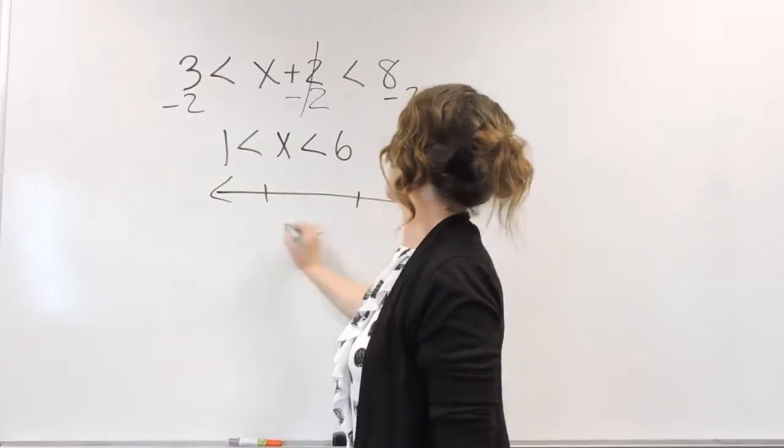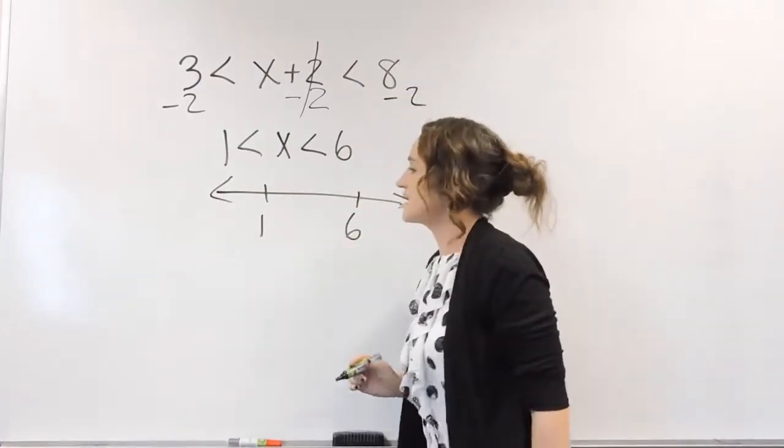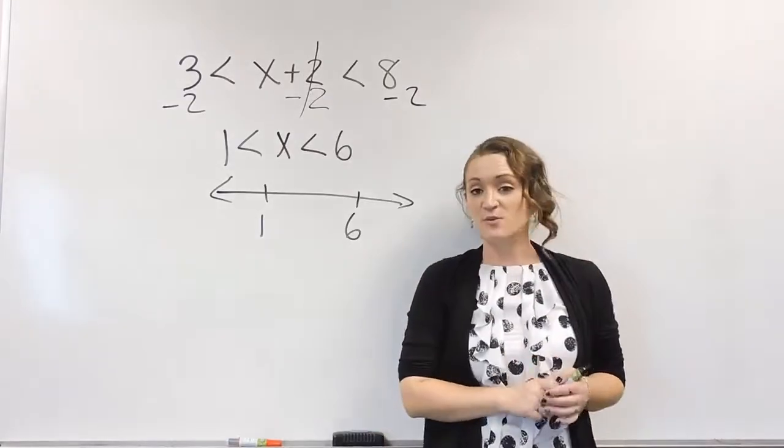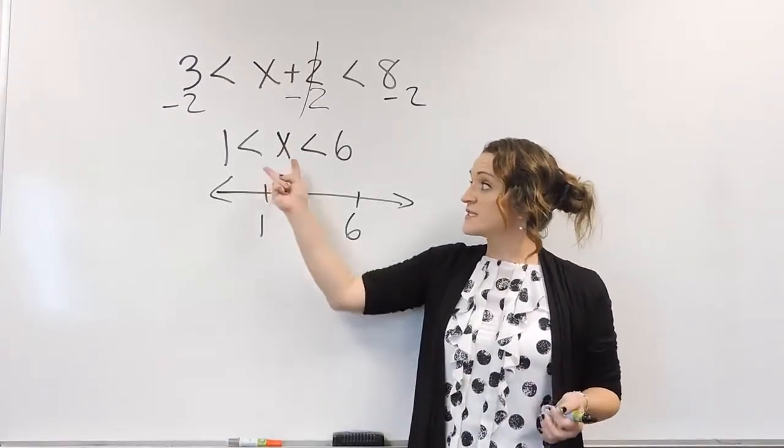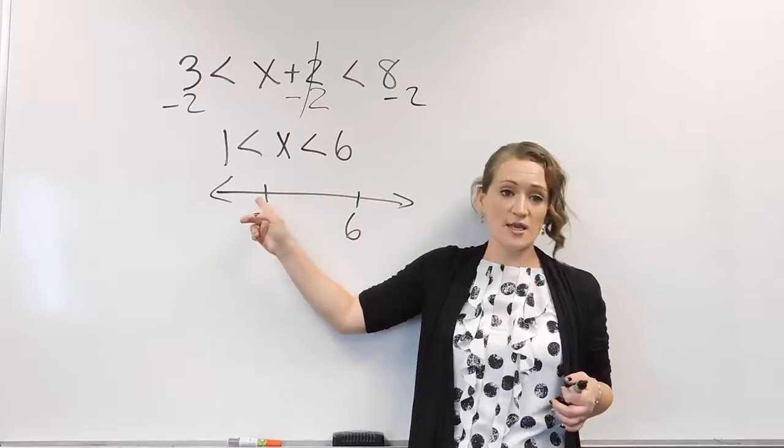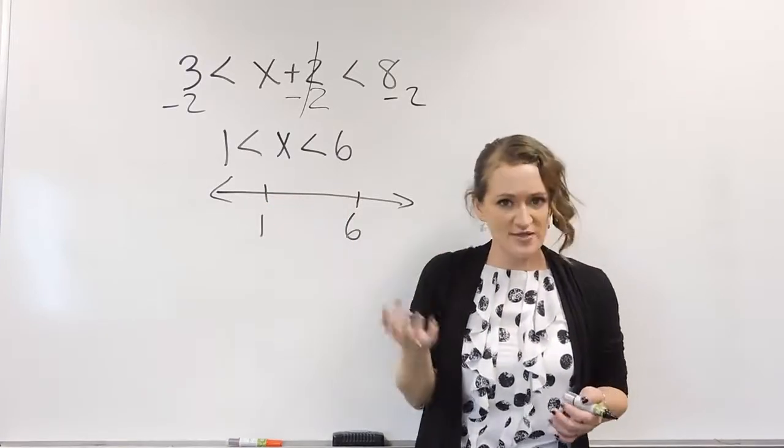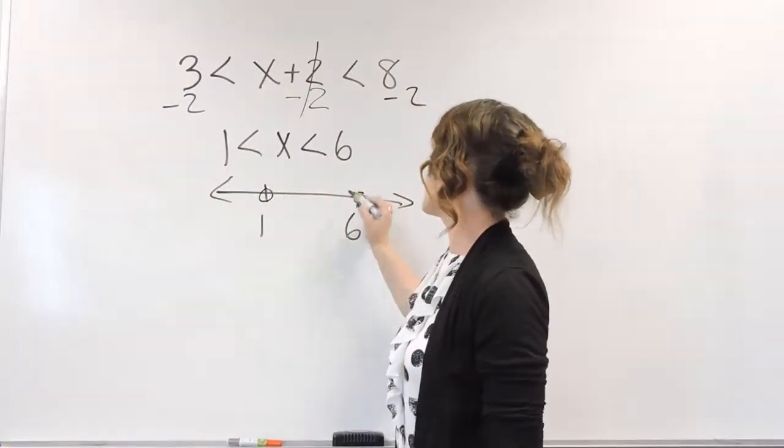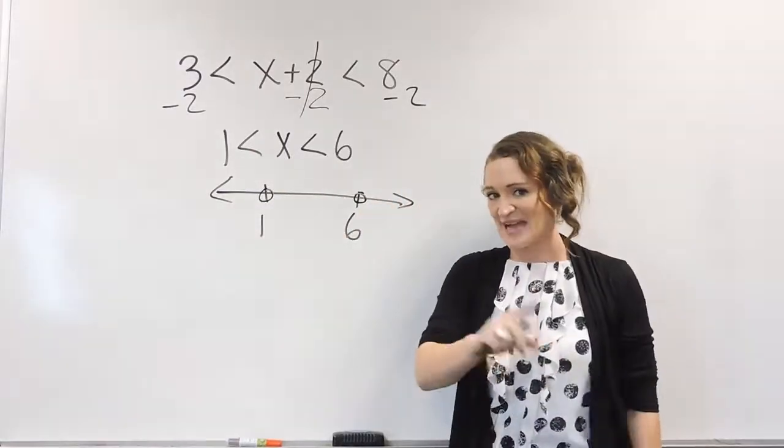So again, when it comes to graphing, there's two main things that you need to be aware of. The first is look at your symbols so you know, do you have solid dots, open dots, parentheses, bracket type thing. So these are open dots on these numbers. That's also the same thing as parentheses.